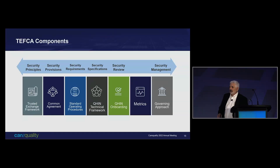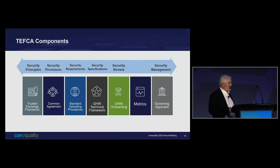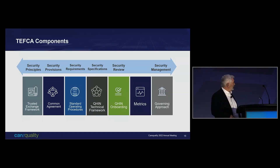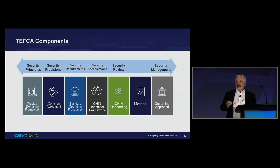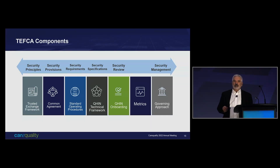Here is the high-level diagram with the different components of TEFCA. Across the top in a big block arrow, we've overlaid highlighted areas of how TEFCA considers security within each component. The Trusted Exchange Framework has some principles, and security is one of them. The Common Agreement is really the foundational document that drives all of the other security requirements for QHINs, participants, and sub-participants. We also have standard operating procedures and a number of security-related SOPs that deal with operationalizing those requirements.